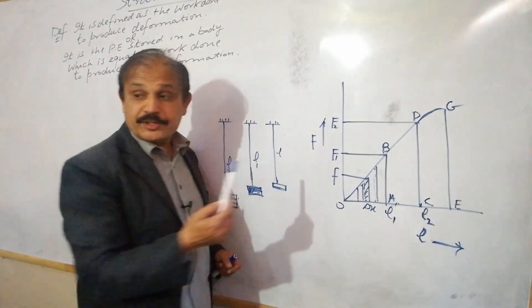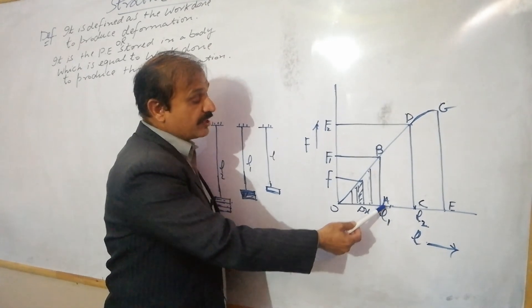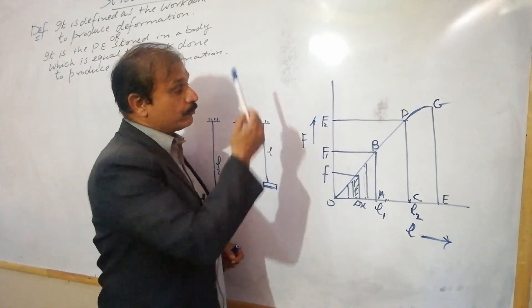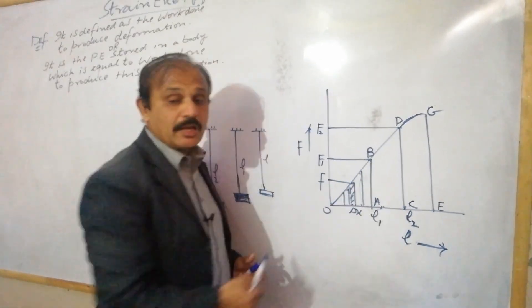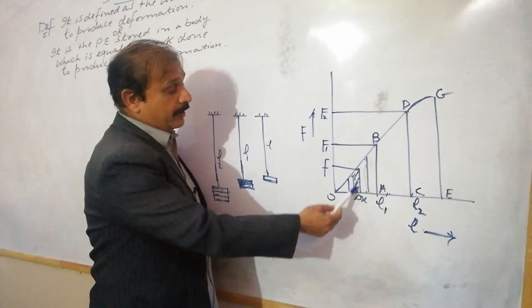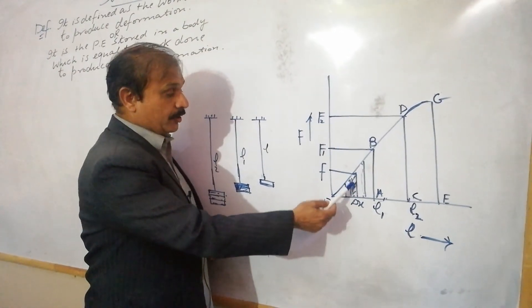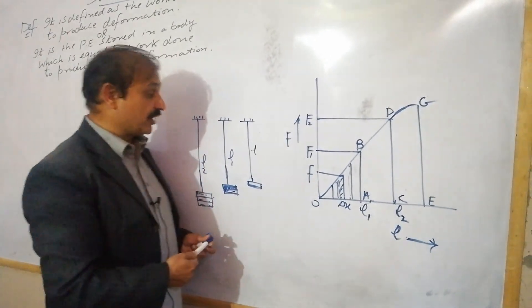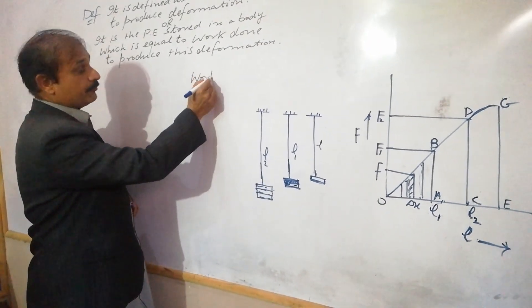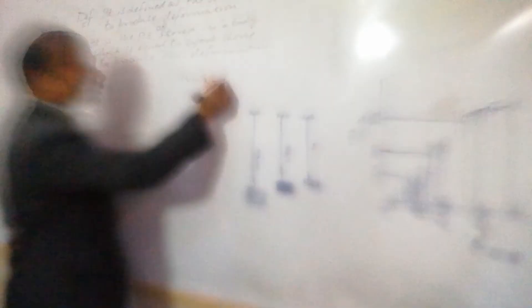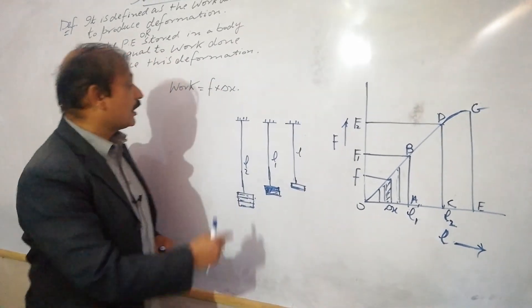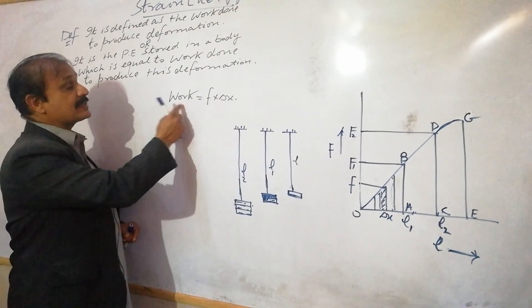Similarly, we have large force F1, then the extension increases to L1. If the force increases to F2, its extension increases to L2, and so on. If we take a small strip with extension delta x, the value of force is small f. If you want to calculate the work done in this portion, in that case work equals f into delta x. That is the small force f times the small extension delta x - that is the work done.